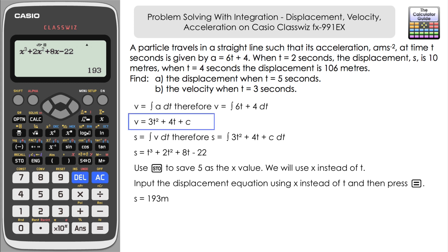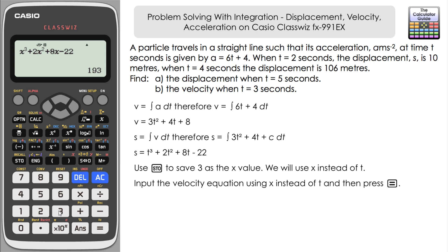Now for part (b), rewriting the velocity equation with c = 8: v = 3t² + 4t + 8. I'll store 3 as x and type out the velocity equation using x in place of t: 3x² + 4x + 8. Press equals and we get 47 meters per second for the velocity of the particle at three seconds. So we used the ClassWiz simultaneous equation solver and stored values to find the missing constants, using the second integral of the acceleration to represent displacement, then went back to calculate velocity.